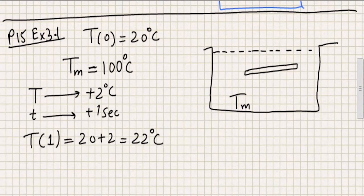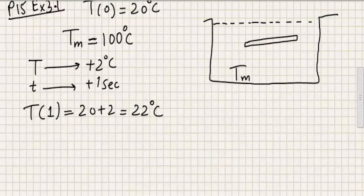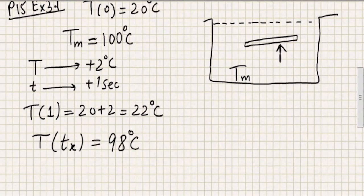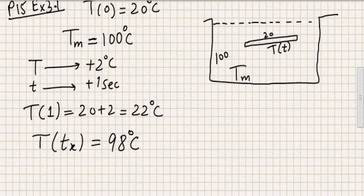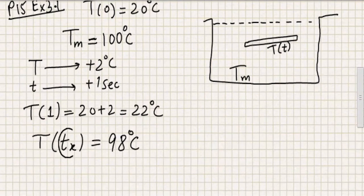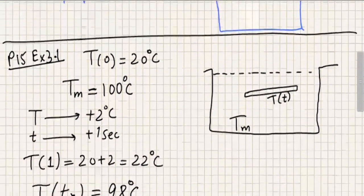The problem asks how long will the bar take to reach 98 degrees centigrade. Since the initial temperature of this metal bar was 20 degrees centigrade and everywhere in the container it is 100, the metal bar is going to keep heating up and eventually approach 100 degrees centigrade. They're asking how long it takes to approximately achieve 98 degrees, and the time we want to find I'm naming as tx.